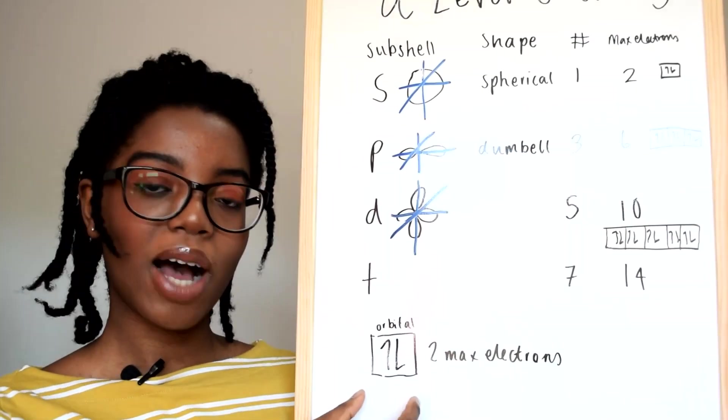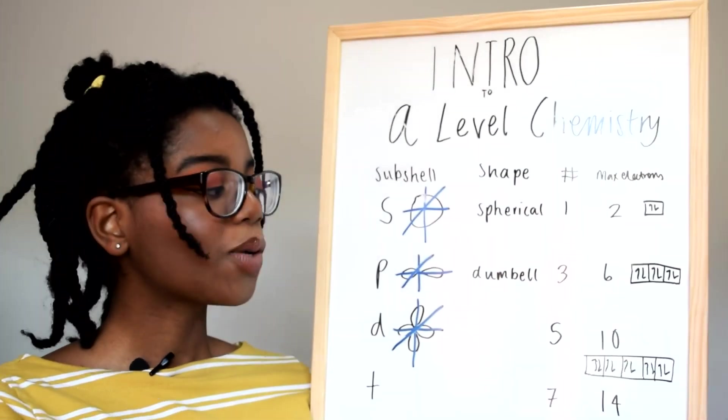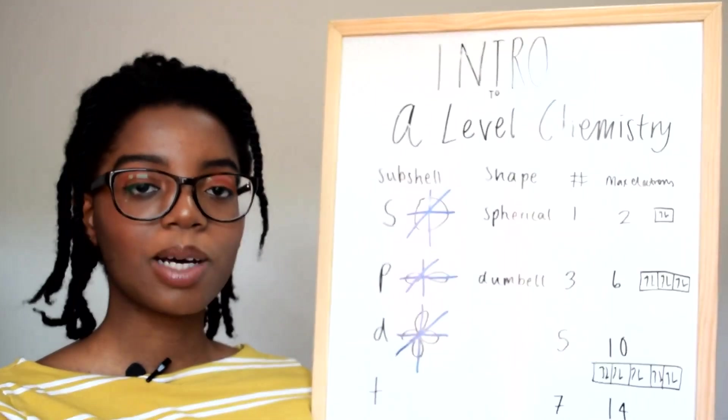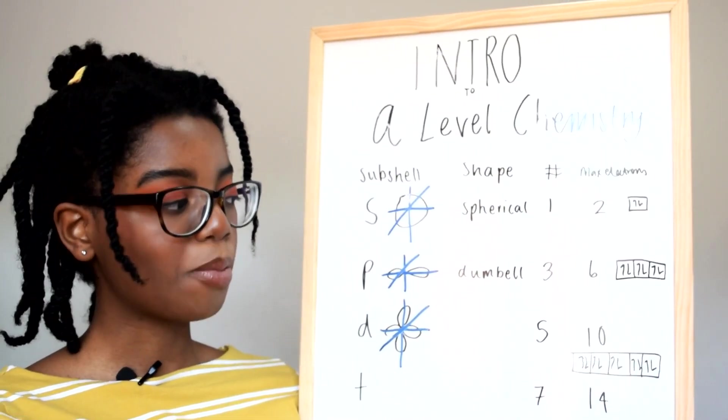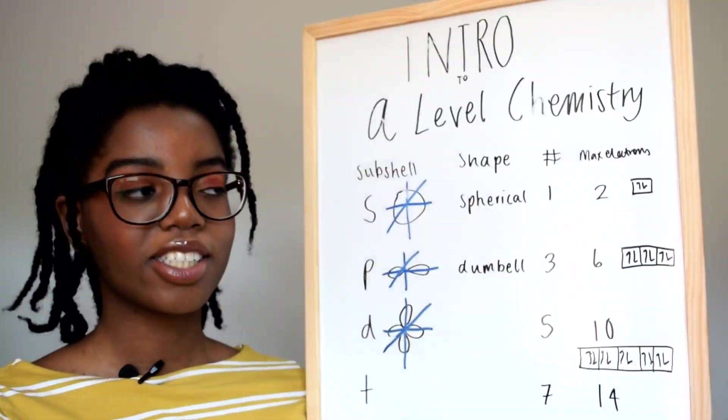Each of these have maximum two electrons. So when you times the amount of orbitals in the subshell, you get the maximum number of electrons in the subshell.